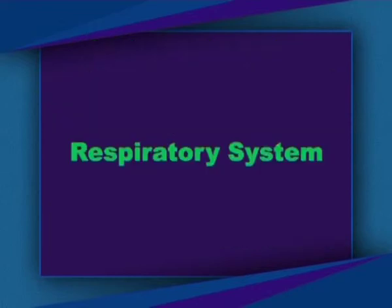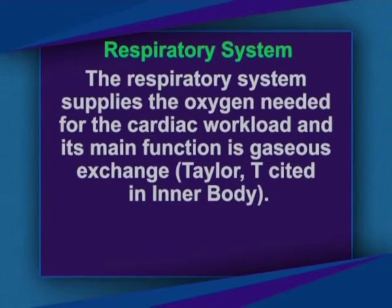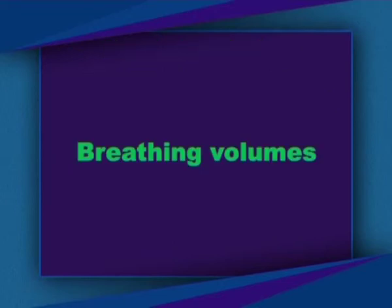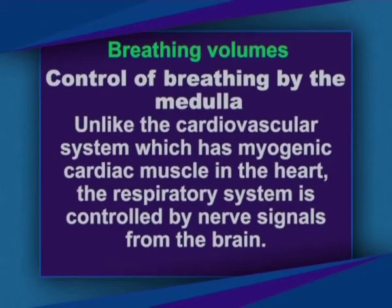The respiratory system is responsible for ensuring the body has a constant supply of oxygen while removing carbon dioxide. It is made up of six organs with three major parts: the airway, the lungs, and the muscles of respiration. Its main function is gaseous exchange. Unlike the cardiovascular system, which has myogenic cardiac muscles, the respiratory system is controlled by nerve signals from the brain.